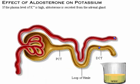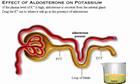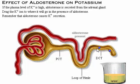If the plasma level of potassium is high, aldosterone is secreted from the adrenal gland. Remember that aldosterone causes potassium secretion.